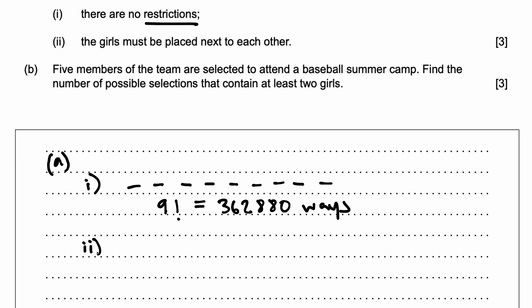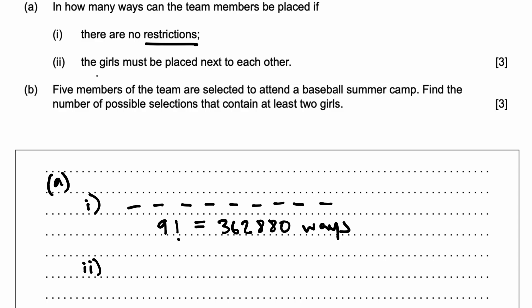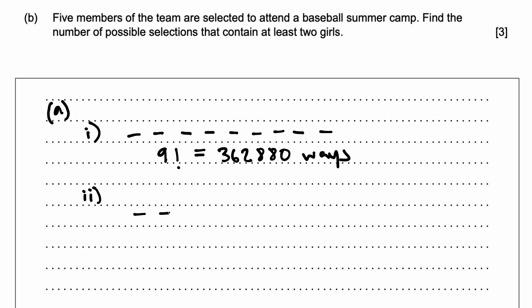Part ii: There is a restriction in this case because the girls must now be placed next to each other. So let's draw the nine seats again: one, two, three, four, five, six, seven, eight, nine. The girls are to be placed next to each other. So how do I do this here? Let's consider, we have to consider the girls as one block, as one entity.